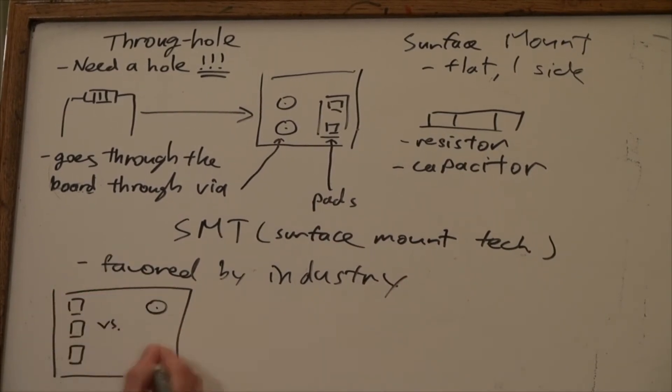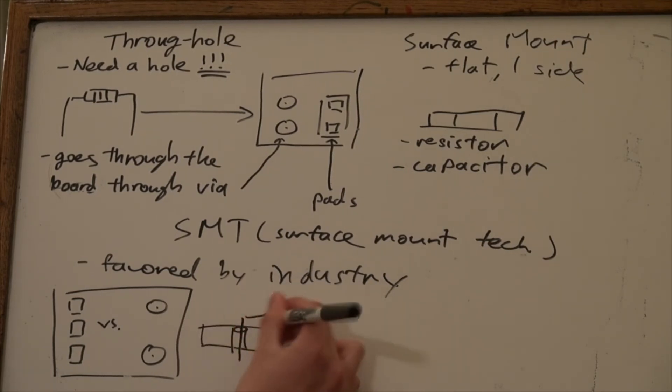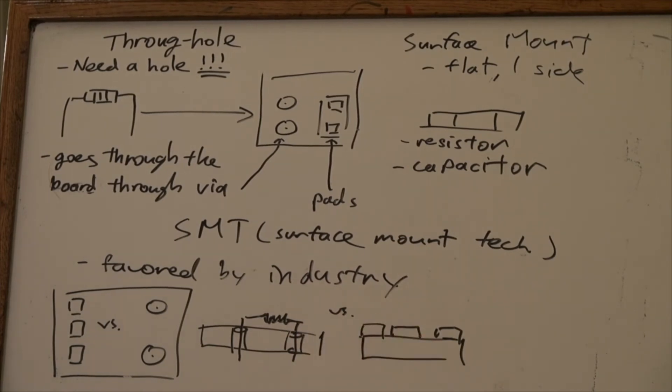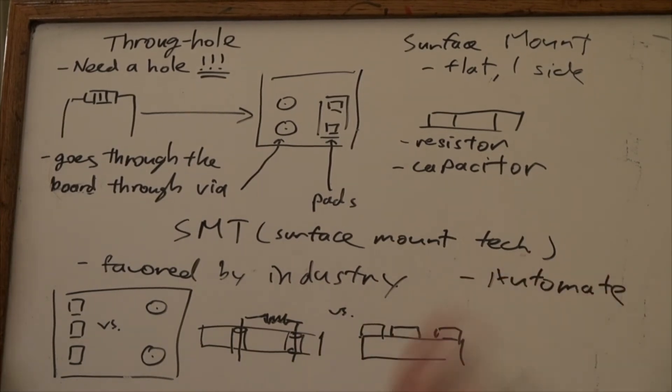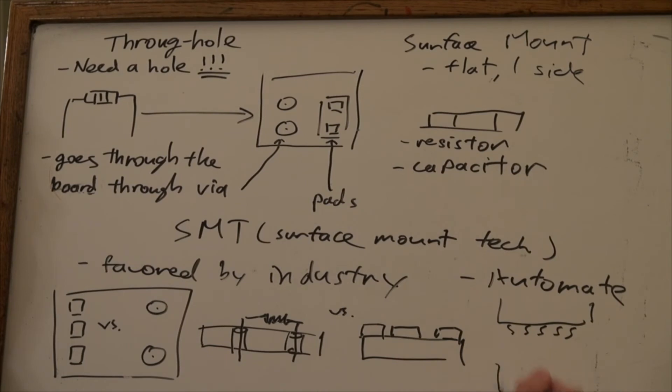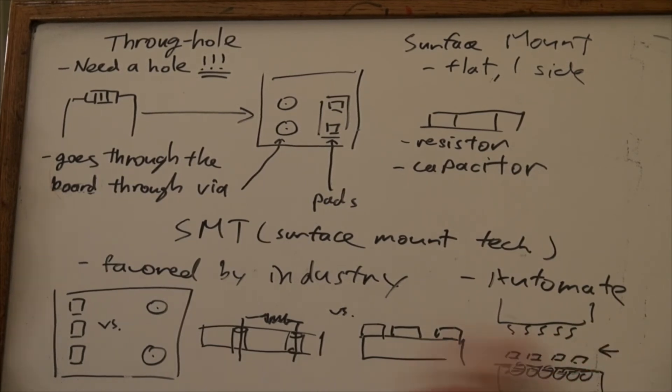Since copper pads do not cut through the board, unlike vias, they do not disturb the copper planes by potentially cutting off connections through the board. It is also much easier to automate the soldering of surface-mount parts, since they simply need to be placed on the pad that has solder paste applied and stuck within the reflow oven, which will then heat the paste and solder the part.